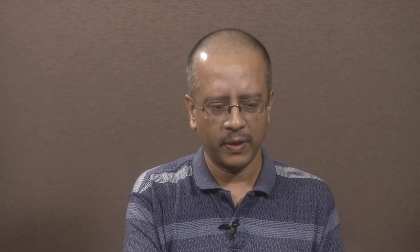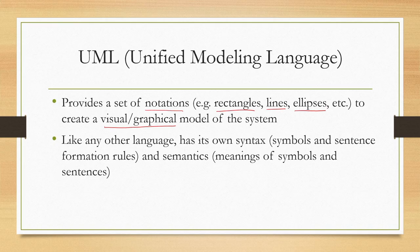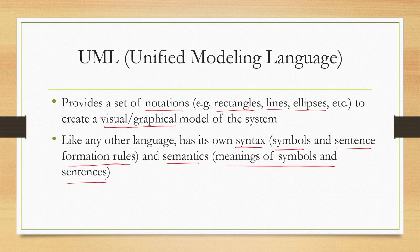UML provides a set of notations — for example, rectangles, lines, ellipses — to create a visual or graphical model of the system. It is a graphical language like DFD. Like any other language, it has its own syntax, meaning the symbols and sentence formation rules, and semantics, meaning the meanings of the symbols and sentences. Of course, this syntax and semantics are different from natural languages like English or Hindi, but conceptually it has both syntax and semantics like any natural language.